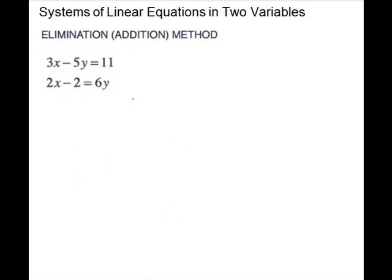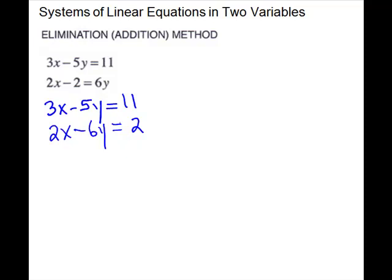So my solution to this system is the ordered pair negative 2, negative 7. For my next system of equations, I'm going to have to rearrange the second equation so that the y lines up with my other y's. On the second equation, I'm going to subtract 6y to get it on the left-hand side and add 2 to get it on the right-hand side. Looking at these, I don't see anything where I can multiply just one equation to cancel a variable. I can see if I multiply the first equation by 2 and the second equation by negative 3, I'll get a 6x and a negative 6x.